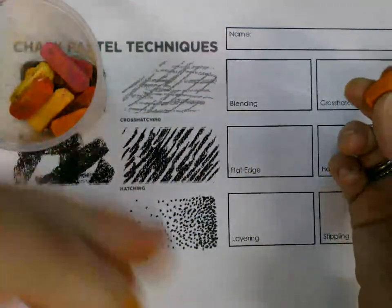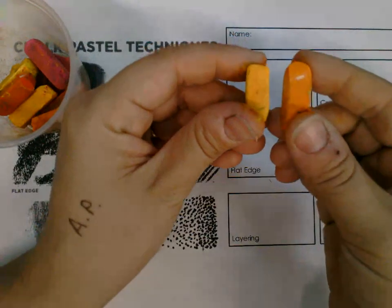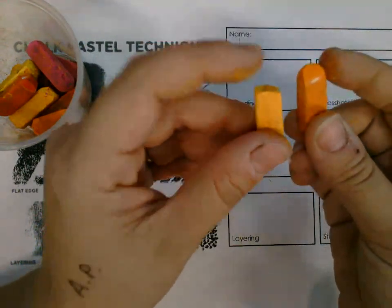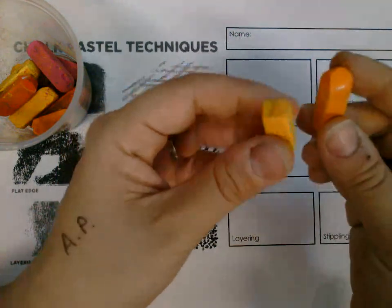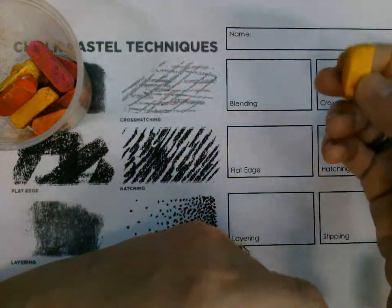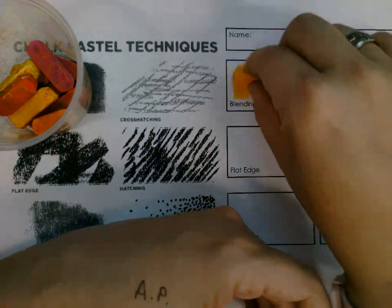So blending, it usually is nicest to use colors that are close together on the color wheel. So I'm using yellow and orange because they blend easily because they're close together. If you use colors that are far apart, they're harder to blend.